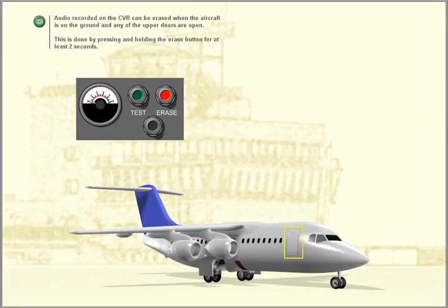Audio recorded on the CVR can be erased when the aircraft is on the ground and any of the upper doors are open. This is done by pressing and holding the erase button for at least two seconds.